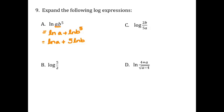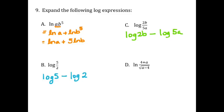On part b, we have log of 5 divided by 2, and whenever you are dividing you subtract exponents, so we rewrite this as log of 5 minus log of 2. On part c, we've got log of 2b divided by 5a — there's multiplication as well as division. Doing the division first: log of 2b minus log of 5a. Then breaking up the multiplication: log of 2 plus log of b, in parentheses, minus log of 5 plus log of a.